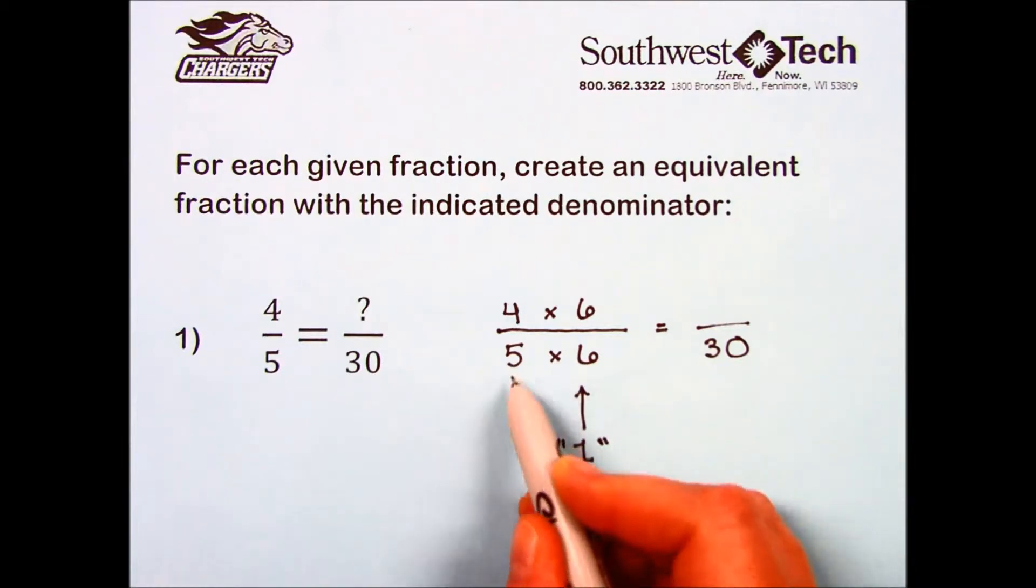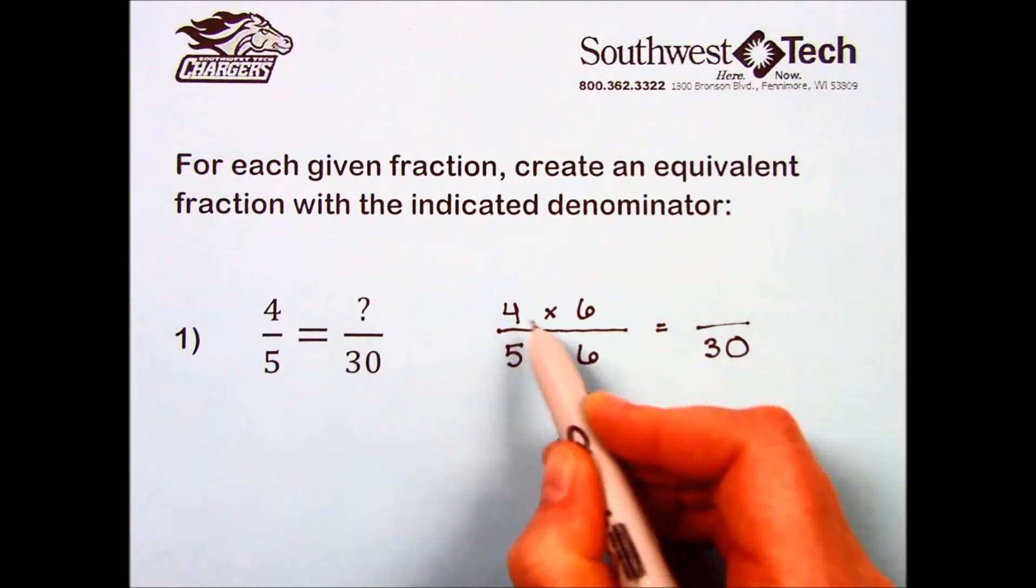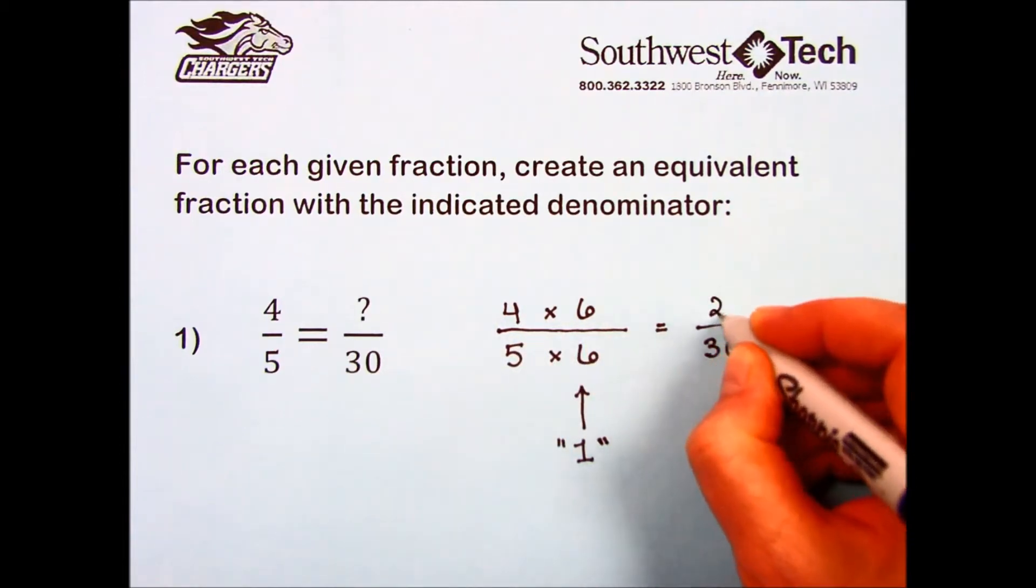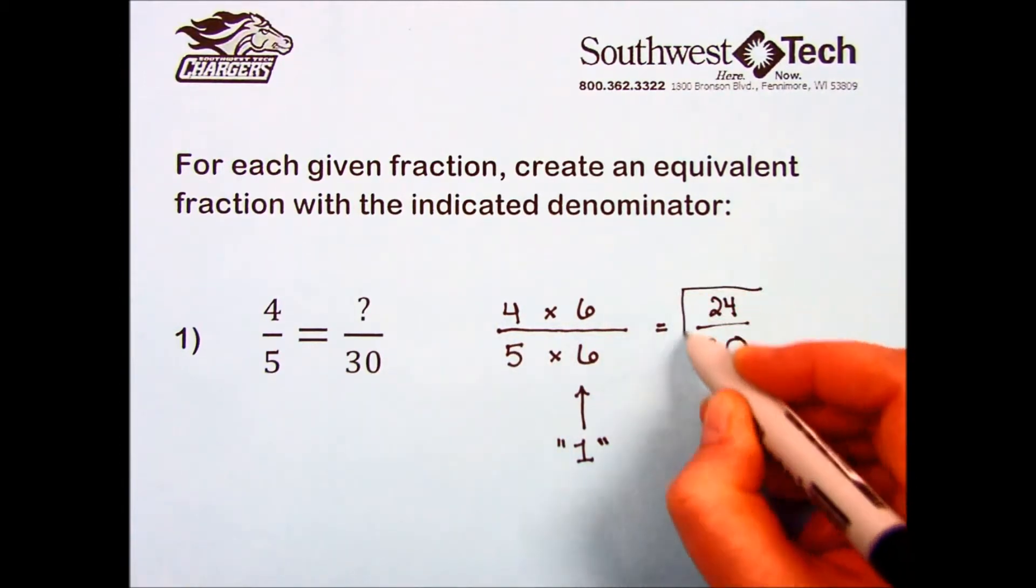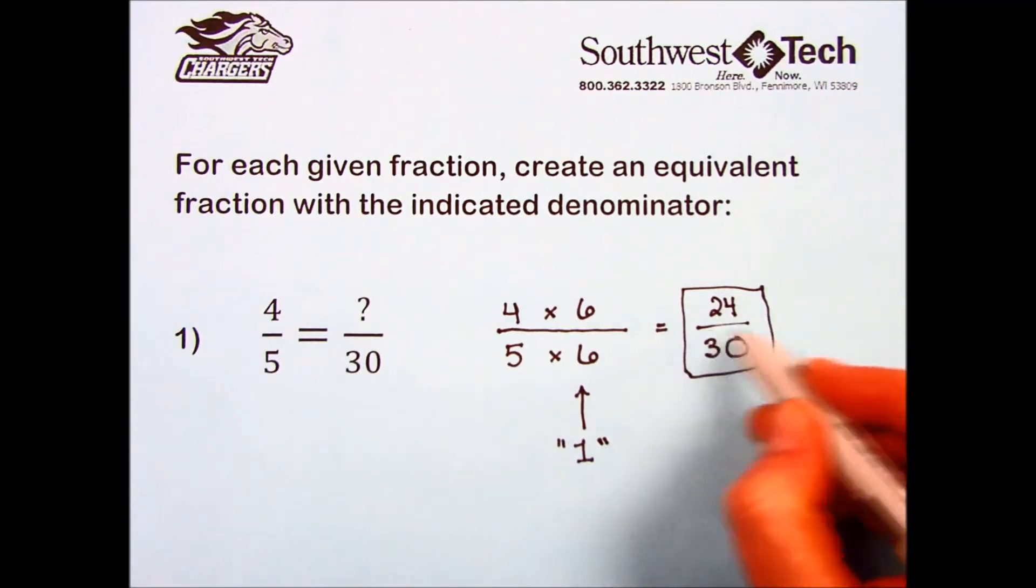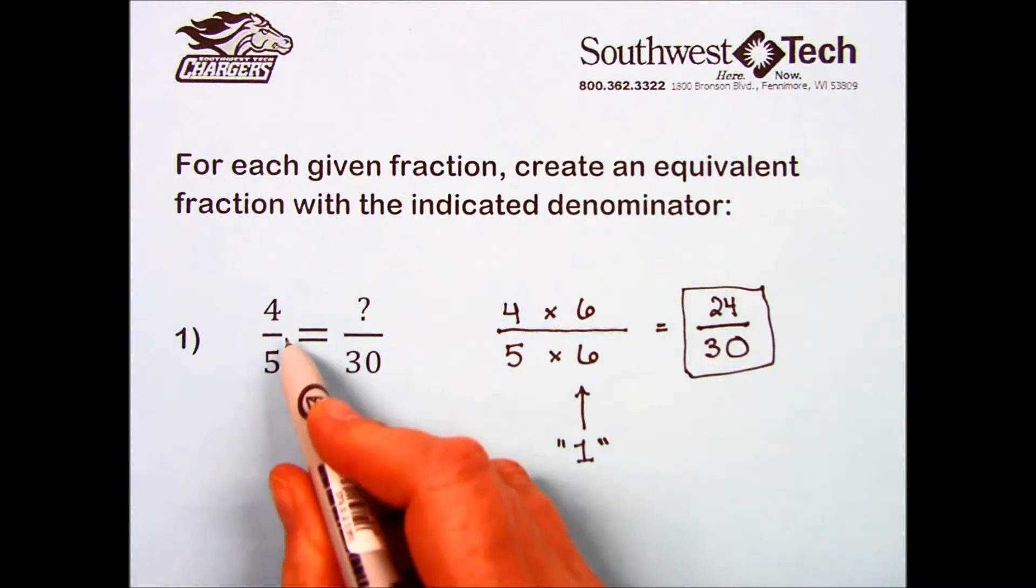So now I have 5 times 6 equals 30. 4 times 6 is 24. We have a fraction, 24 thirtieths, that has the same value as 4 fifths, but just a different name.